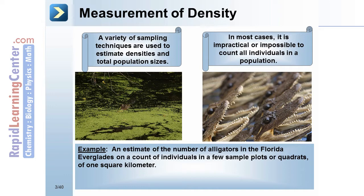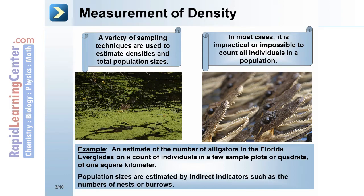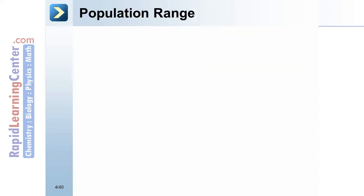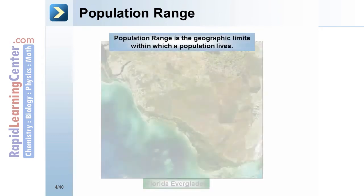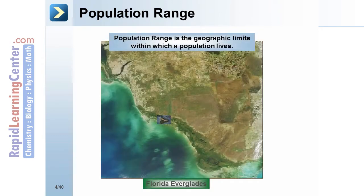For example, an estimate of the number of alligators in the Florida Everglades uses a count of individuals in a few sample plots or quadrants of one square kilometer. Population sizes are also estimated by indirect indicators such as the number of nests or burrows. Population range is the geographic limits within which a population lives.